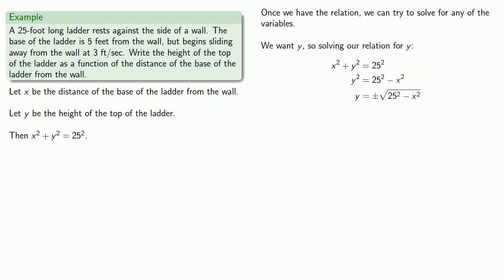Now, strictly speaking, if we take the square root of something, we do have to include this plus or minus to allow for the possibility of a negative answer. But since the height y should be positive, we'll take the positive square root only and get our function y equals square root of 25 squared minus x squared.